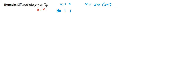Now let's differentiate this function for v, which is sine 2x. We'll use the chain rule here. We need to differentiate the inside first before the outside. So differentiate the inside, 2x, which gives us 2. Then differentiate the outside — the derivative of sine is cosine. So dv equals 2 cosine 2x.